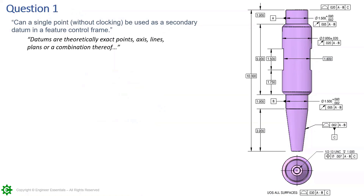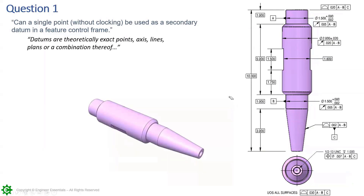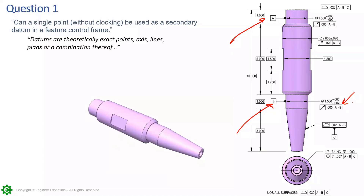So can a single point without clocking be used as a secondary datum feature in a feature control frame? We'll see here that we're going to use a tapered cone as datum C, which is the secondary datum feature in these feature control frames. Let's walk through this drawing example — we can see this rotating shaft using datum feature A and datum feature B to create datum A-B. This might be new to a lot of people, seeing this unique scenario where you can use two datum features to create a single datum axis.